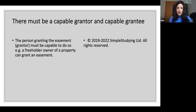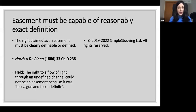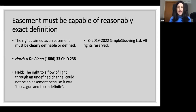Regarding capable grantor and capable grantee, the person granting the easement must be capable to do so — they must be a freehold owner of the property with the right to grant a proprietary right to someone else over the land in question. The easement must be capable of a reasonably exact definition; the right claimed as an easement must be clearly definable. In Harris v Pina, it was held that the right to a flow of light through an undefined channel could not be an easement because it was too vague or too indefinite. So if something is too vague or too indefinite, it most probably won't be an easement.